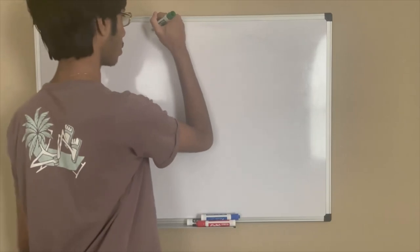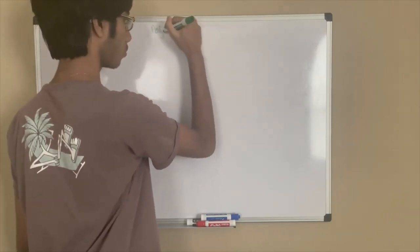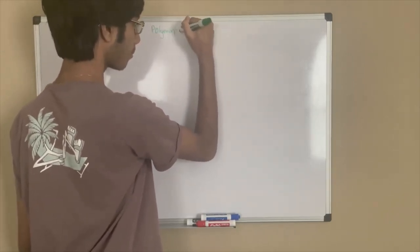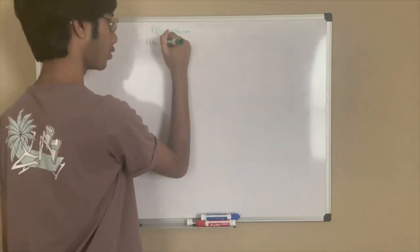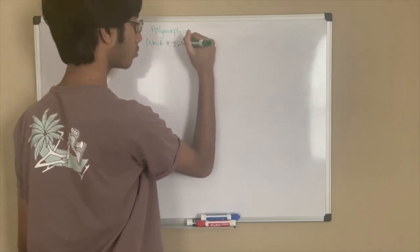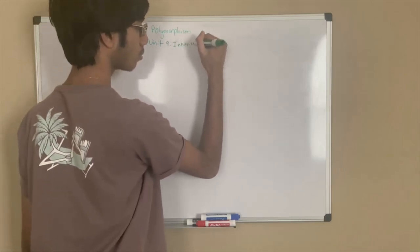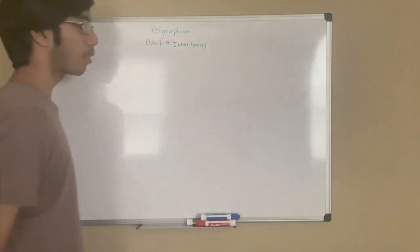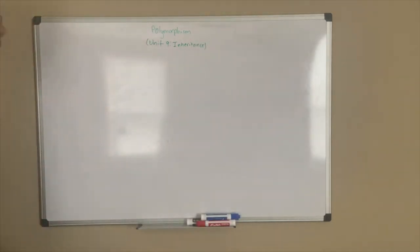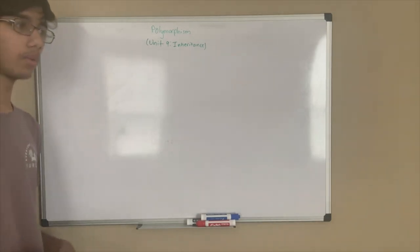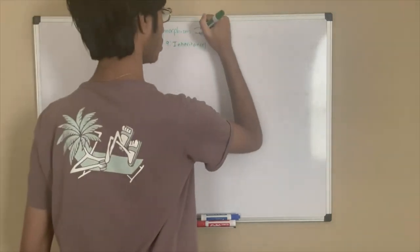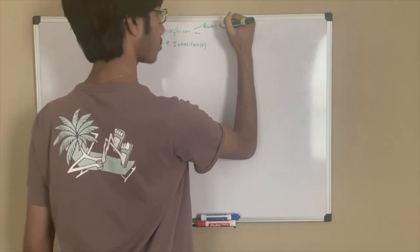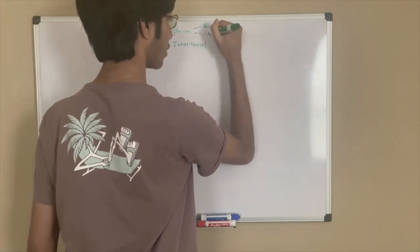In this video I'm going to be covering polymorphism. This is covered in unit nine, inheritance. It's part of a lesson with inheritance, and luckily you kind of already know how polymorphism works because I've already talked about the two concepts of polymorphism. Polymorphism just consists of two parts: runtime polymorphism and compile time polymorphism.